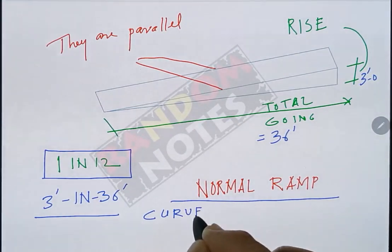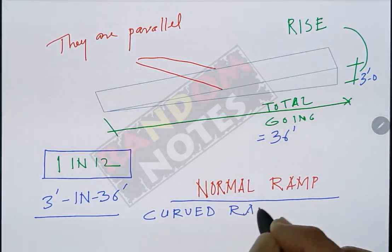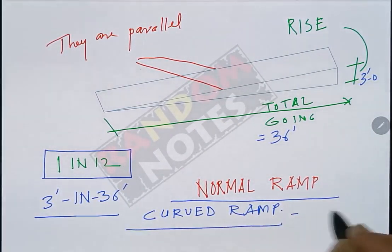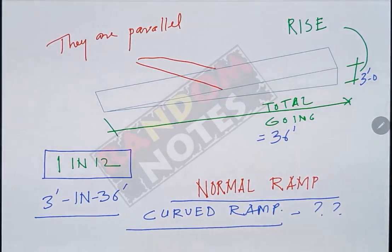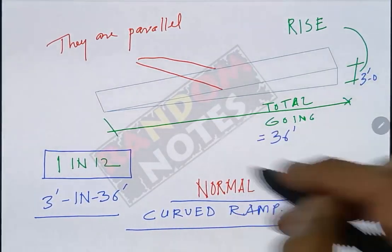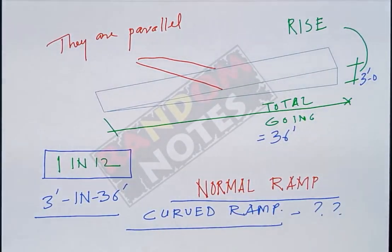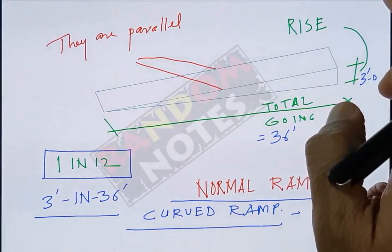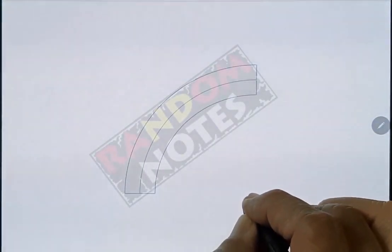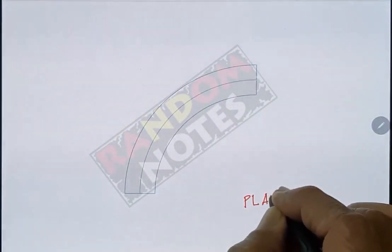But is this the case for a curved ramp also? Let us see. We will now do a curved ramp for the same going of 36 feet and a rise of 3 feet. For that we will first make the ramp in plan. This is the plan of the curved ramp which is one fourth of a circle.